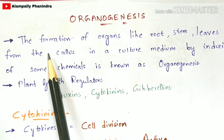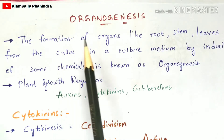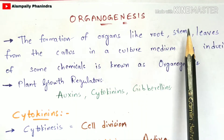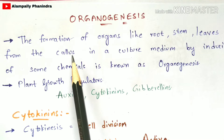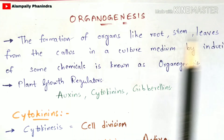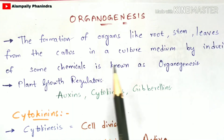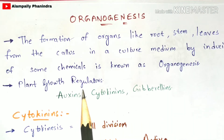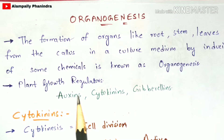In this definition, the formation of organs like root, stem, and leaves from the callus in a culture medium by inducing some chemicals is known as organogenesis. If I explain the procedure in a diagrammatic form, you can easily understand it.